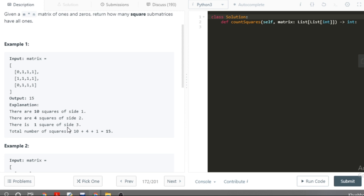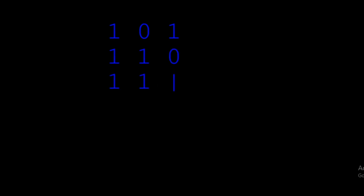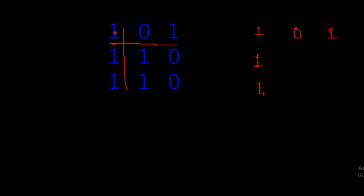Let's see how we can solve this intuitively. Suppose we have this example matrix. For the top row and leftmost column, we don't need any special processing — we can just say if it is one then we have one square, and if it is zero then we have zero squares.